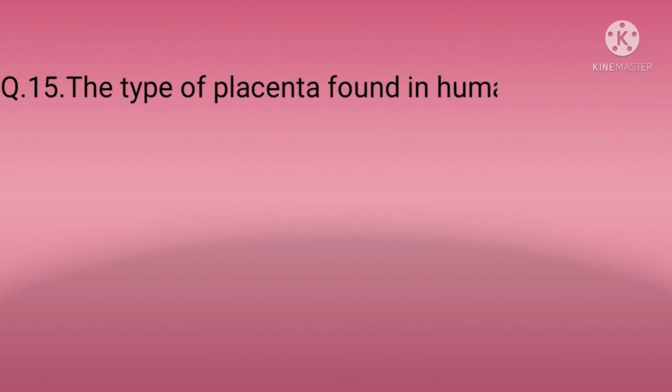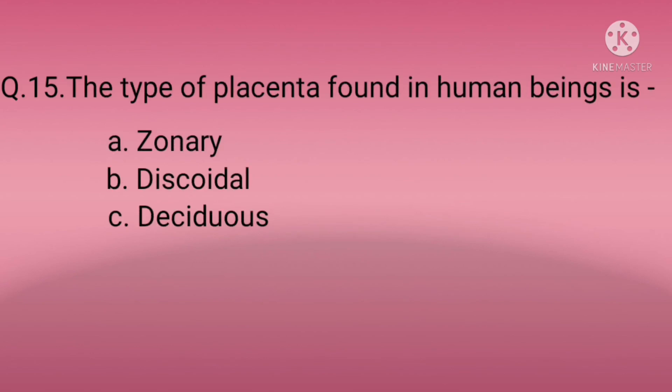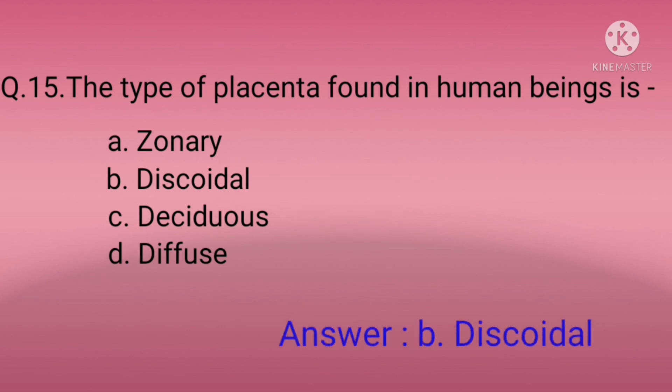Question fifteen: The type of placenta found in human beings is? Option A: Zonary, Option B: Discoidal, Option C: Deciduous, Option D: Diffuse. The correct option is B — discoidal.